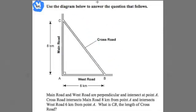So it says use the diagram below to answer the question that follows. They give a diagram, read it over, study it. It says main road and west road are perpendicular and intersect at point A. Crossroad intersects main road 8 kilometers from point A and intersects west road 6 kilometers from point A. What is CB, the length of crossroad? And we have some possible measurements for CB crossroads measurement.